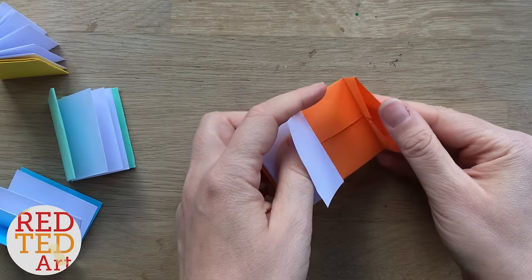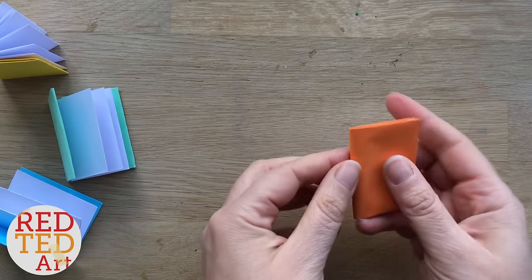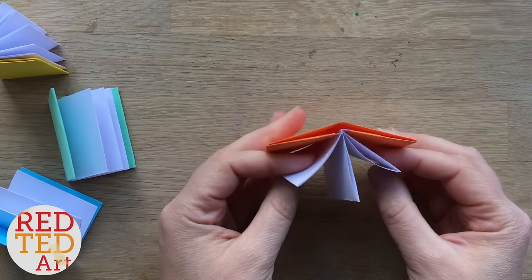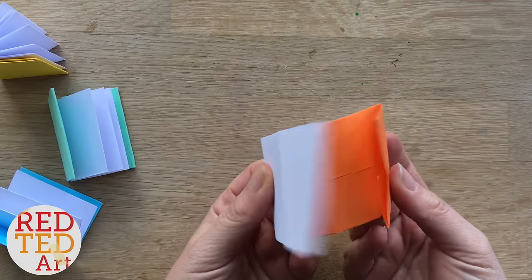Tuck it in, and then take the other side, and again, you see these folds—you can tuck it in. Now that is your basic booklet finished. Isn't that neat? Now that's obviously only got six pages, so if you want to add more pages, what I've done on the yellow one is you literally repeat that last step.